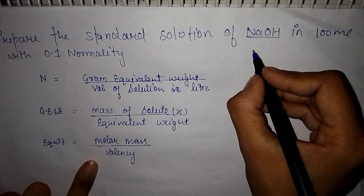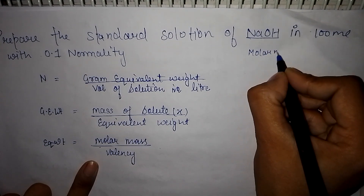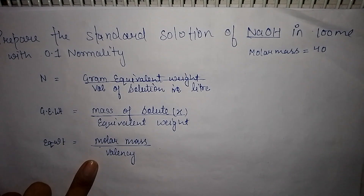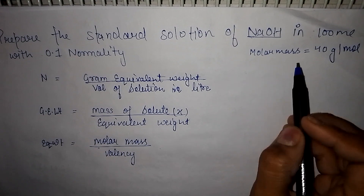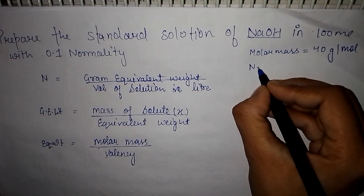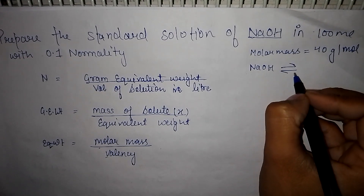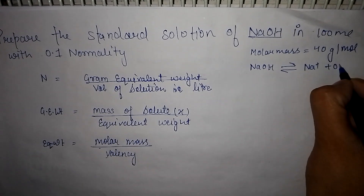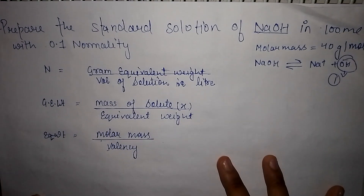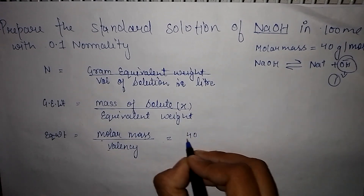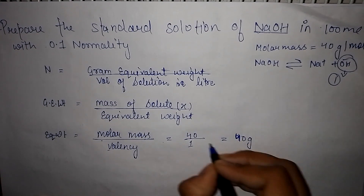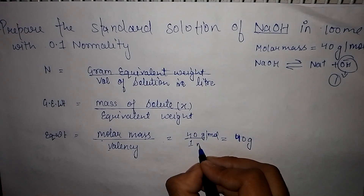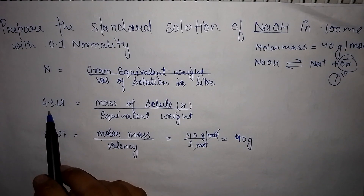For NaOH, we know the molar mass is 40 grams per mole — you can also calculate this by summing atomic masses. The valency of sodium hydroxide is 1, because NaOH dissociates into Na⁺ and OH⁻, releasing one OH⁻. So equivalent weight equals 40 divided by 1, which gives 40 grams per equivalent.